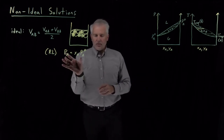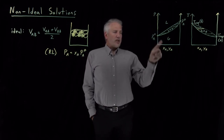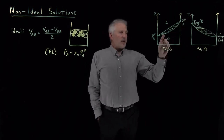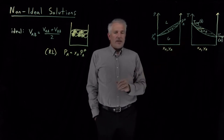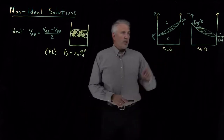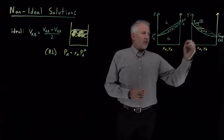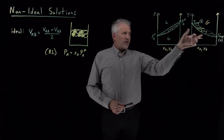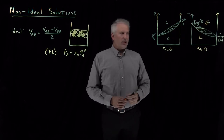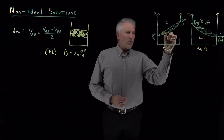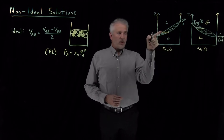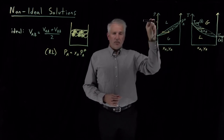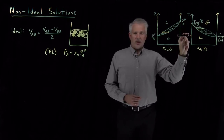By looking at this in more detail, we've seen that pressure-composition and temperature-composition diagrams describe two different types of phase diagrams that tell us whether we're in the liquid phase or the vapor phase. We have liquid-gas coexistence regions that we can use with tie lines to determine the compositions of the vapor and the liquid that are in equilibrium with one another at a particular total pressure or temperature.